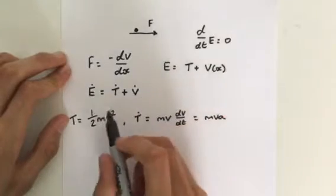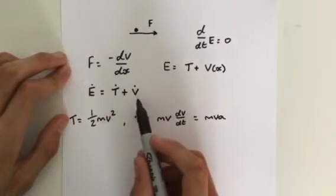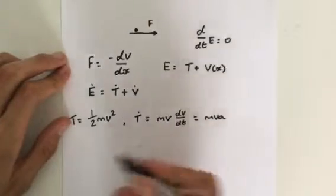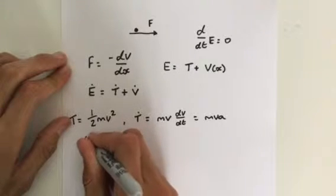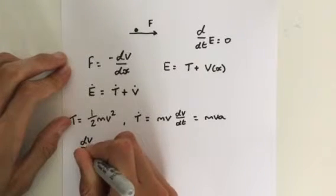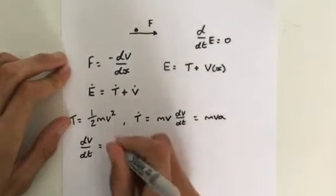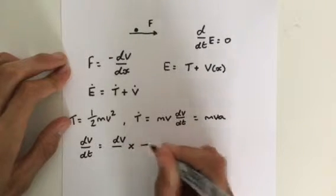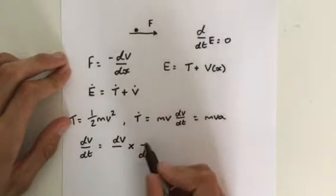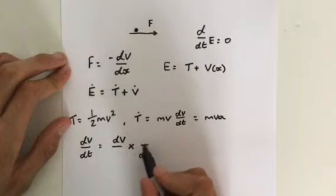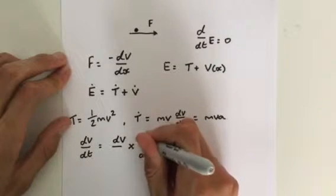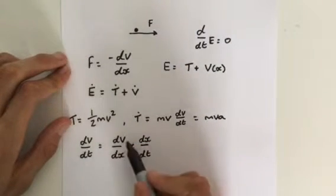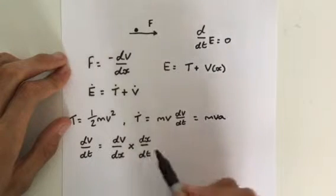So our total energy rate is mvA plus the rate of change of potential energy. What's the rate of change of potential energy? Well, dV/dt — we can use the chain rule. The chain rule, where the only variable we have left is x, gives us dV/dt is equal to dV/dx times dx/dt.